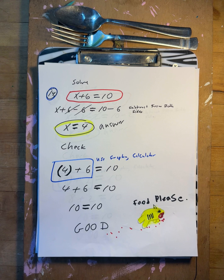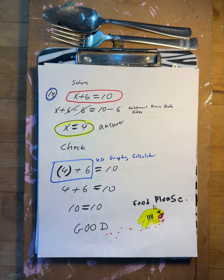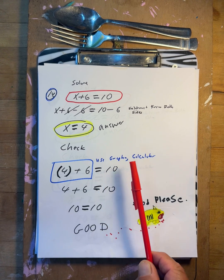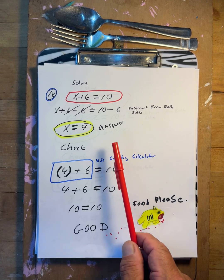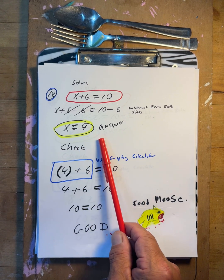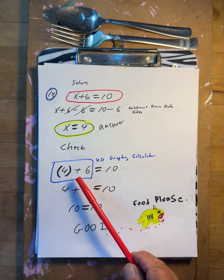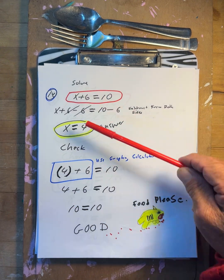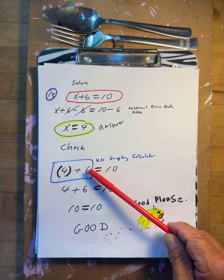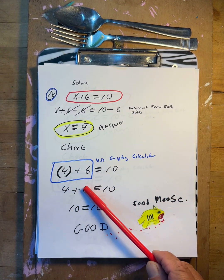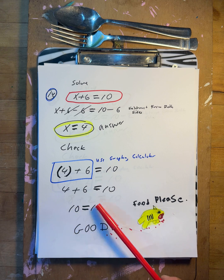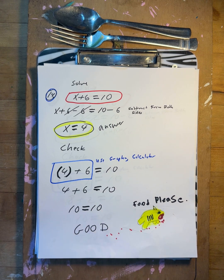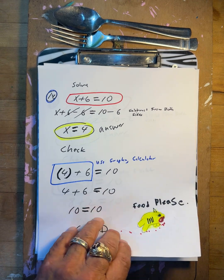x plus six equals ten. Minus six, minus six. So x equals four. Does that work? Put four in: four plus six — take the parentheses off — four plus six is ten. Yes.